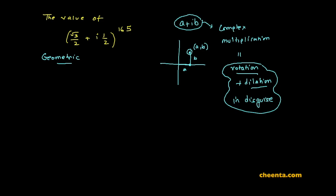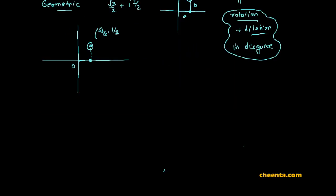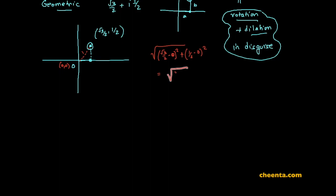Coming back to it — for the purpose of this discussion let's draw the point √3/2 + i·(1/2). This point is nothing but (√3/2, 1/2). It has a very interesting property that will be useful for our problem: its distance from the origin is 1. You can check it — using the normal distance formula: √((√3/2)² + (1/2)²) = √(3/4 + 1/4) = 1.